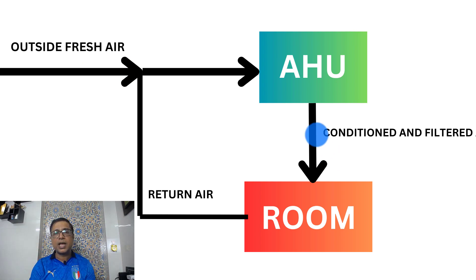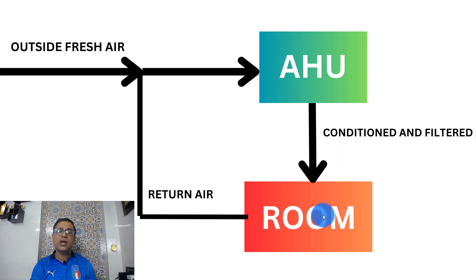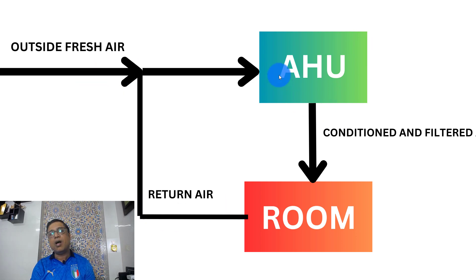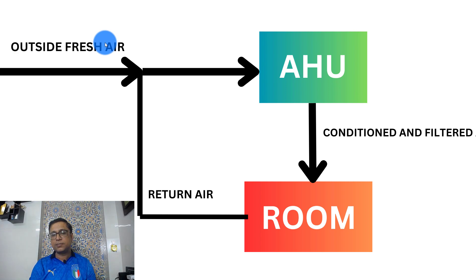AHU ka principle yeh hai: AHU room se return air lega, us mein outside fresh air add karke mix karke, us air ko condition aur filter karke phir se room mein supply karega. Us conditioned room se phir se return air aayegi, us mein outside fresh air aayegi aur AHU ko phir se supply karegi. Is case mein outside fresh air jo bhi ambient ka temperature ho, usi temperature pe andar aa rahi hai.